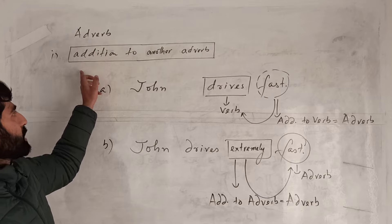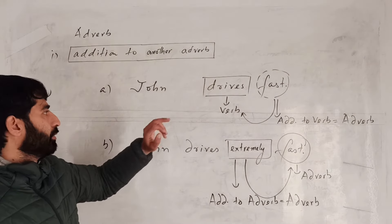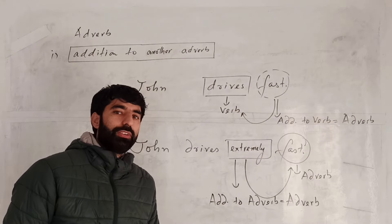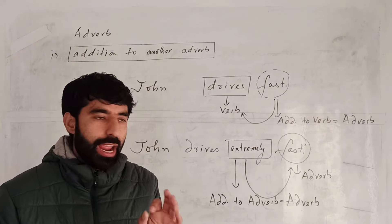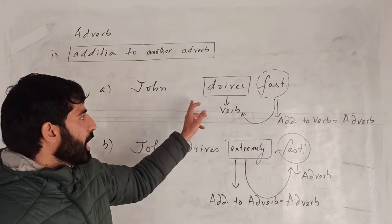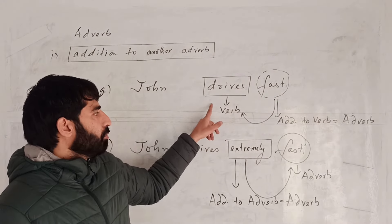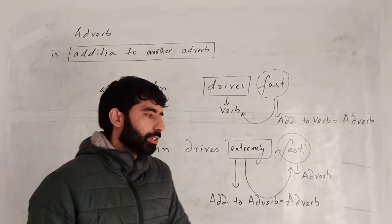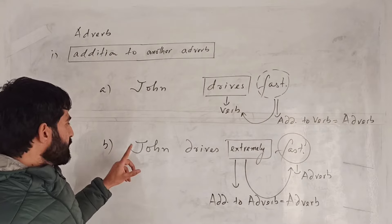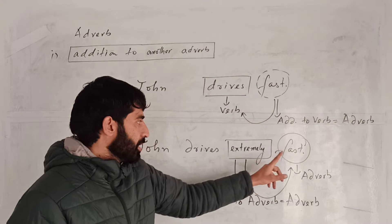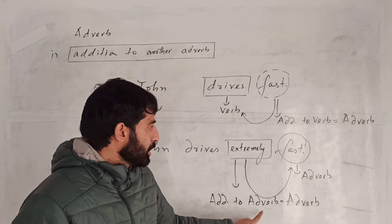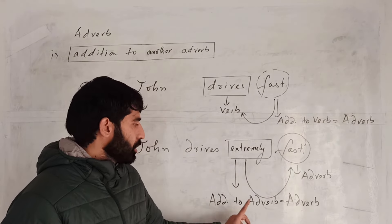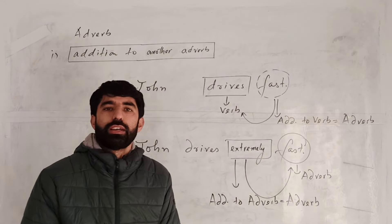Let's repeat: adverb as an addition to another adverb. We already have an adverb in the sentence, and one more word attaches itself with it and also becomes an adverb. 'John drives fast' — fast is an addition to verb, so it is an adverb. 'John drives extremely fast' — fast is adverb, extremely is an addition to fast, so extremely is also an adverb.